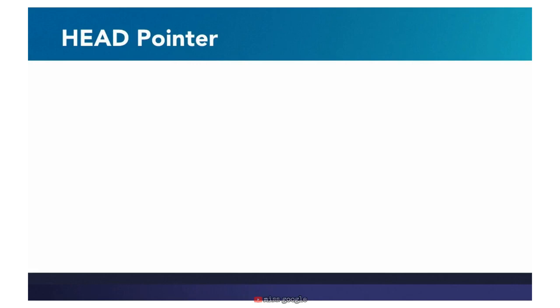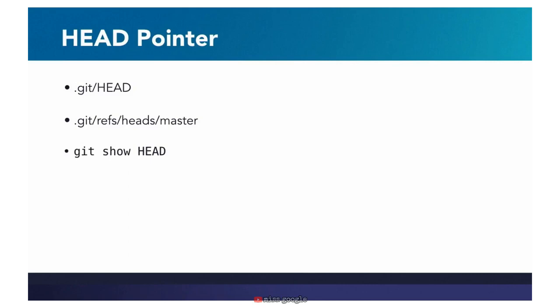Git keeps track of where the head is pointed using files in the .git directory. The first is .git/HEAD in all caps, which usually refers to something else, but that's where Git goes first. Most of the time, if we're on the master branch, it'll tell you it refers to another file stored in .git/refs/heads/master. If you looked inside that file, it would contain a SHA pointing to a commit. Git follows those references until it gets to a commit, so we can just type git show head.